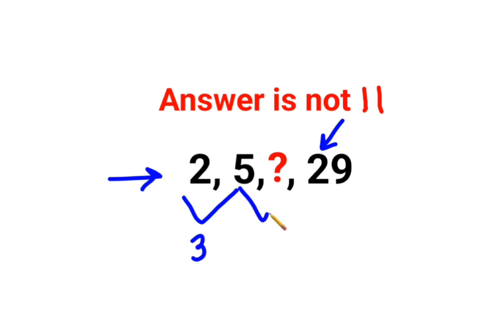A lot of people thought let's skip 7 and the answer should be 11. But if that was the case, then after 11 the prime number is 13, so the last number should have been 17, not 29. That's not the case, so this is definitely not the correct approach.